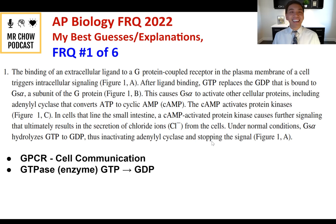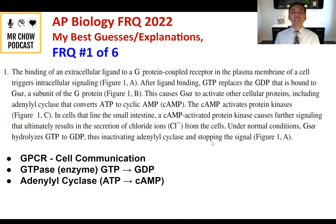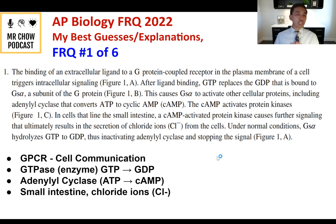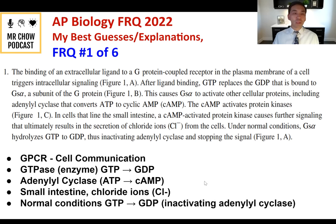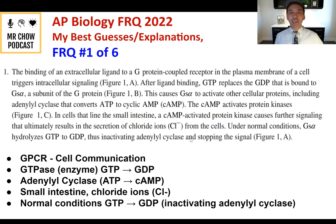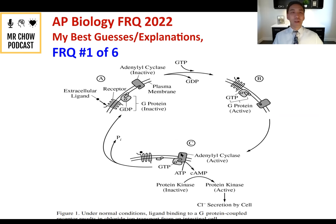Key notes: GPCRs and GTPases are enzymes that convert GTP to GDP. Adenyl cyclase converts ATP to cAMP. This all takes place in the small intestine with chloride ions. Under normal conditions, GTP becomes GDP, inactivating adenyl cyclase. They provide a standard GPCR diagram showing the three steps: reception, transduction, and response — ultimately causing a signaling cascade leading to CL secretion by the cell.